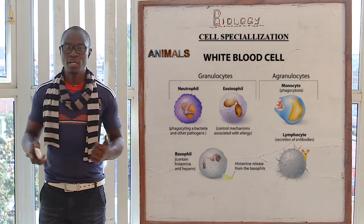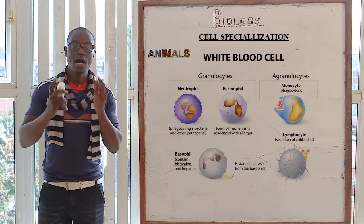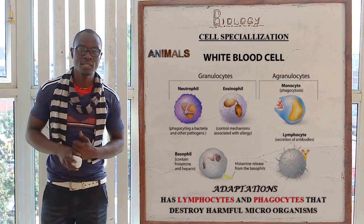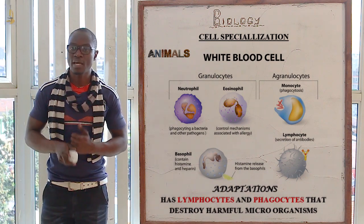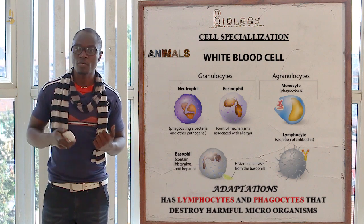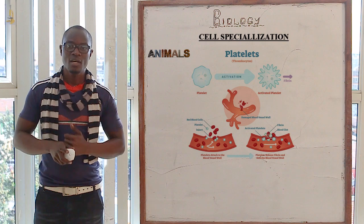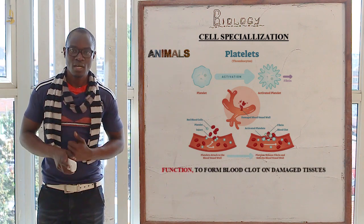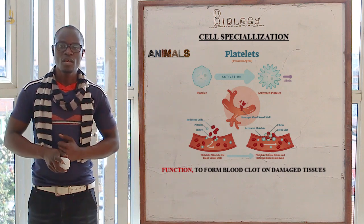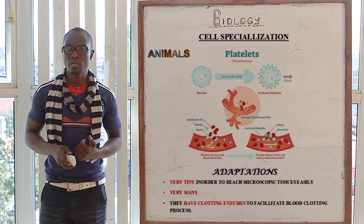We also have the white blood cell, whose function is to destroy and fight harmful microorganisms. Its adaptations include lymphocytes and phagocytes which play a part in the destruction of harmful microorganisms in the body. The other specialized cell is the platelet. The function of the platelet is that it forms a clot — if the blood vessels are ruptured, the platelets form a clot to stop bleeding. Adaptations include that they are very tiny, very numerous, and they contain enzymes which are responsible for clotting.